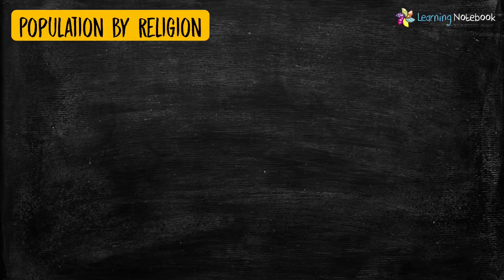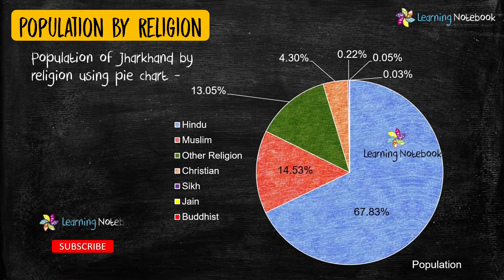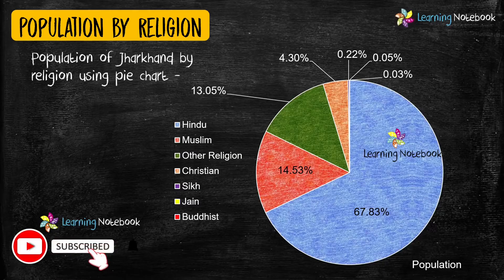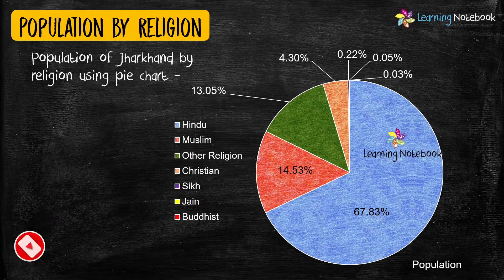Students, a pie chart is another beautiful way to represent the given data. So you may use a pie chart to show the population of Jharkhand by religion.